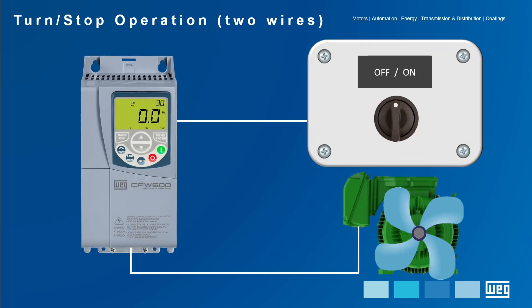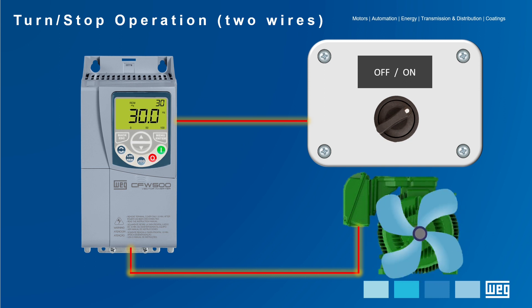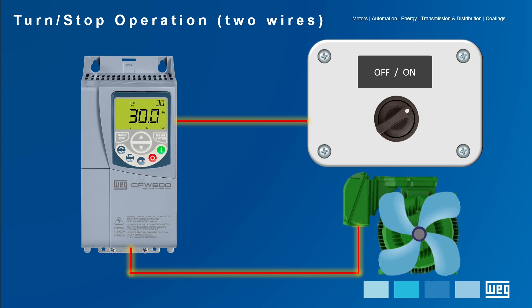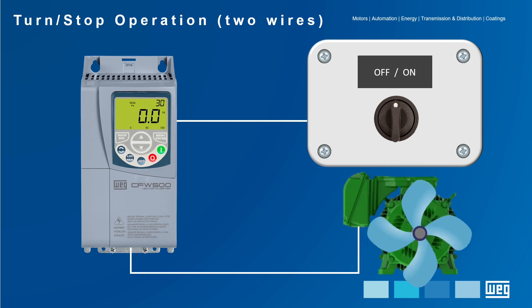Once the physical connections are completed and the parameters are set, here is an operation representation for the two-wire TURN STOP command. When switching the knob to the ON position, it closes its normally open contact and the drive will accelerate the motor up to the speed reference set by the HMI — in this example, 30 Hz. Switching to the OFF position, the NO contact opens and the drive will turn off the motor respecting the deceleration ramp.